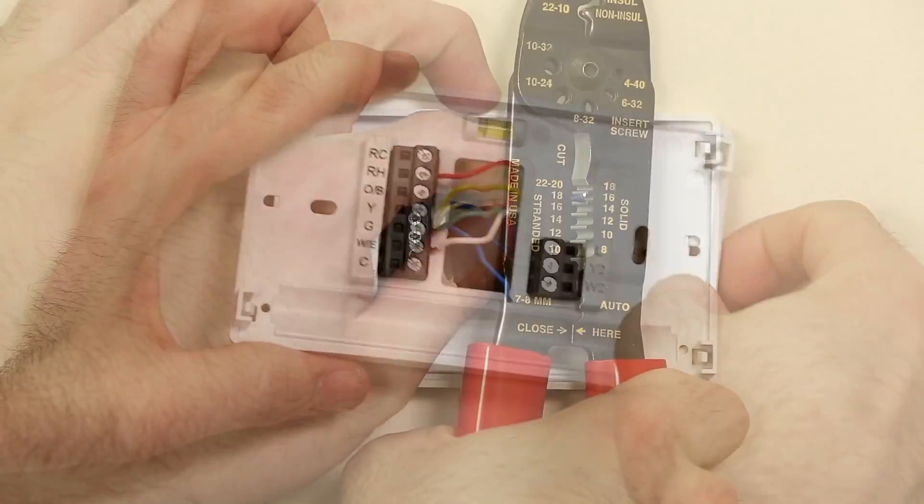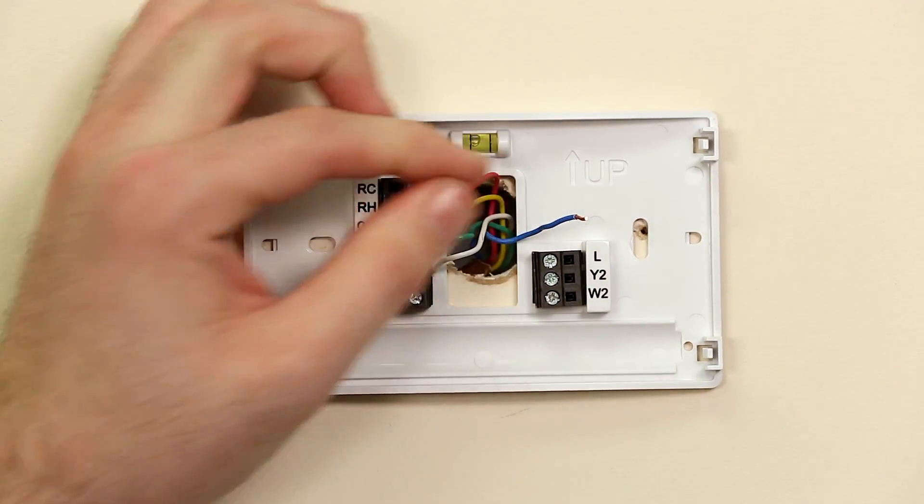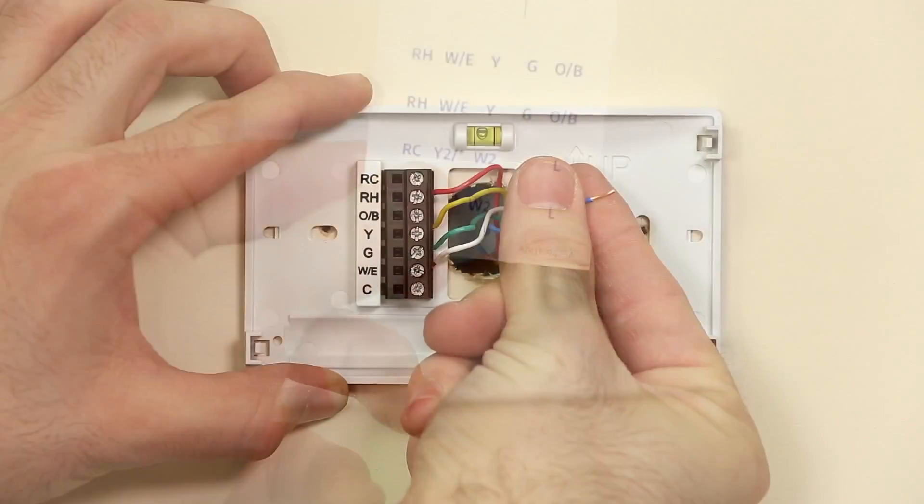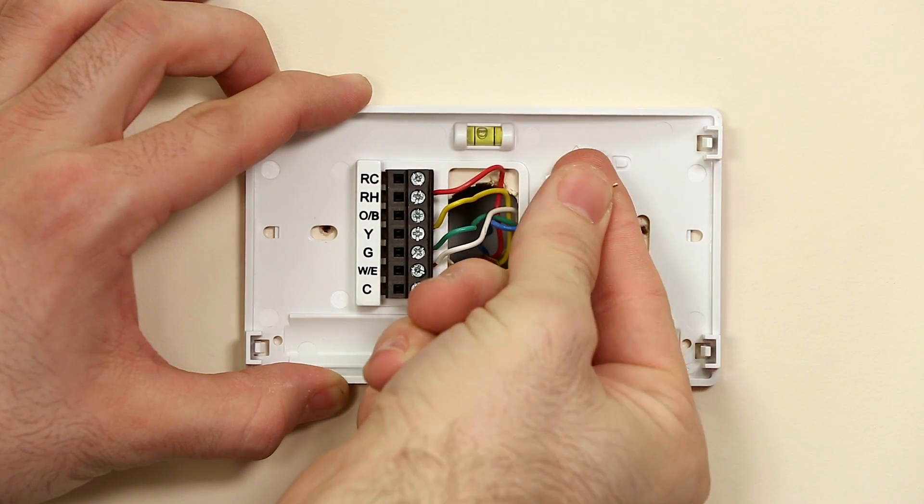Using a wire stripper, expose a quarter inch of wire at the end. Find the wire labels that came in your Sensi thermostat box and label this wire with your C wire label.